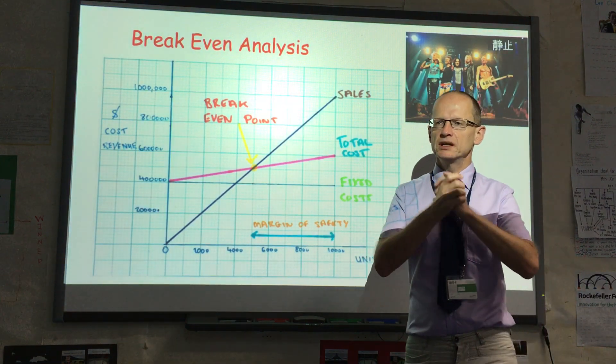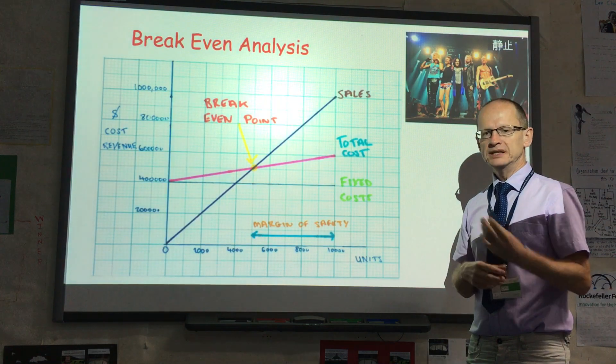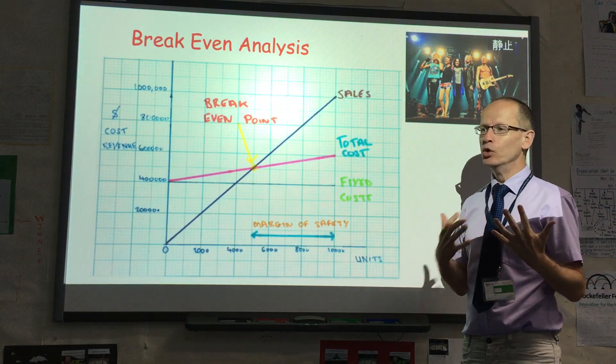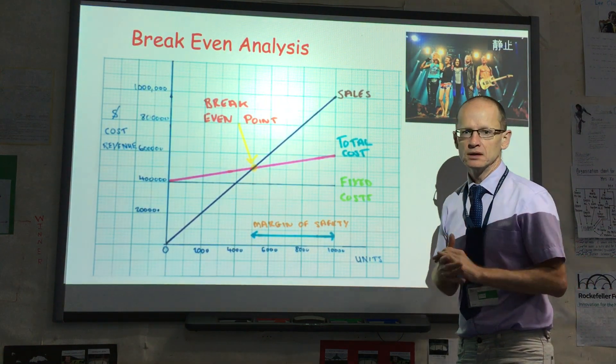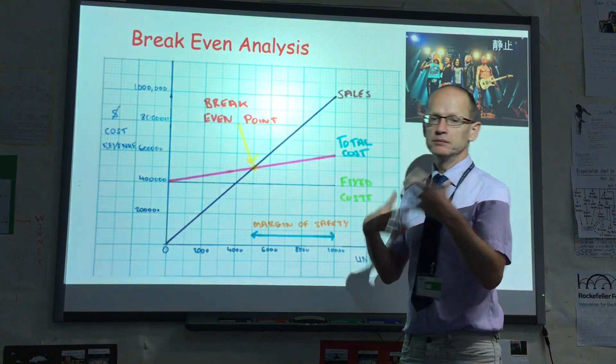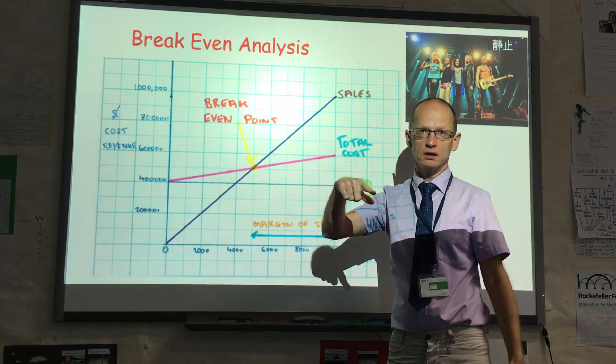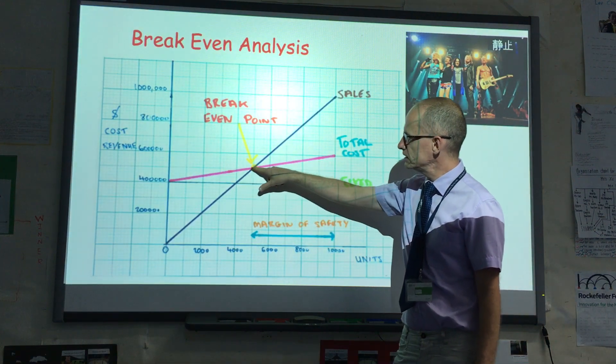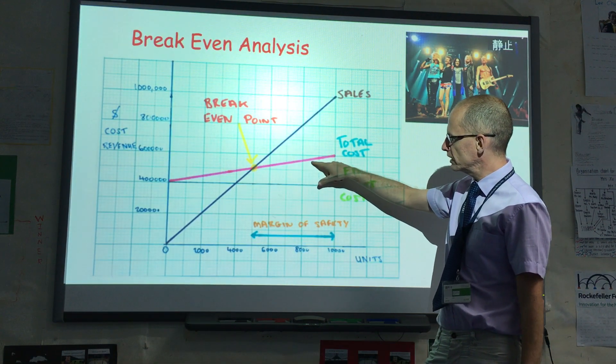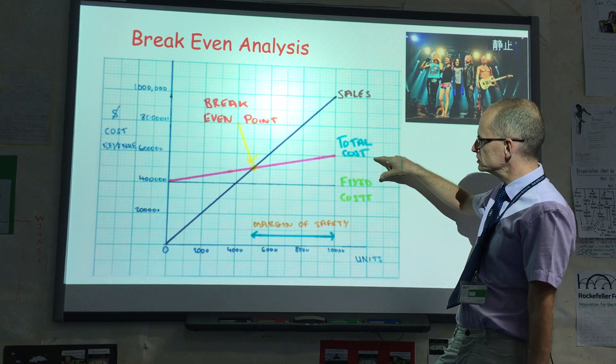Also, economies of scale and diseconomies of scale exist, which means that the total cost does not move in direct proportion to the production. So what might happen, for example, in the case of economies of scale would be that the line starts to go a little bit more like that. It still increases, but it goes a little bit like that.